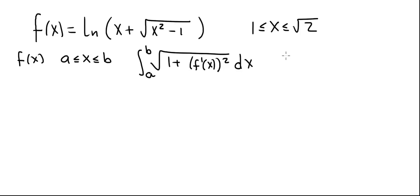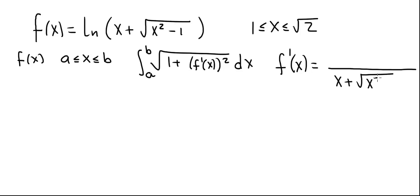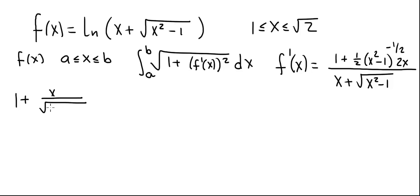We're going to differentiate this function. f prime of x is equal to: in the denominator we have x plus the square root of x squared minus 1, and in the numerator we have 1 plus one half times x squared minus 1 to the minus one half times 2x. Simplifying this, this is 1 plus x divided by the square root of x squared minus 1, divided by x plus the square root of x squared minus 1.